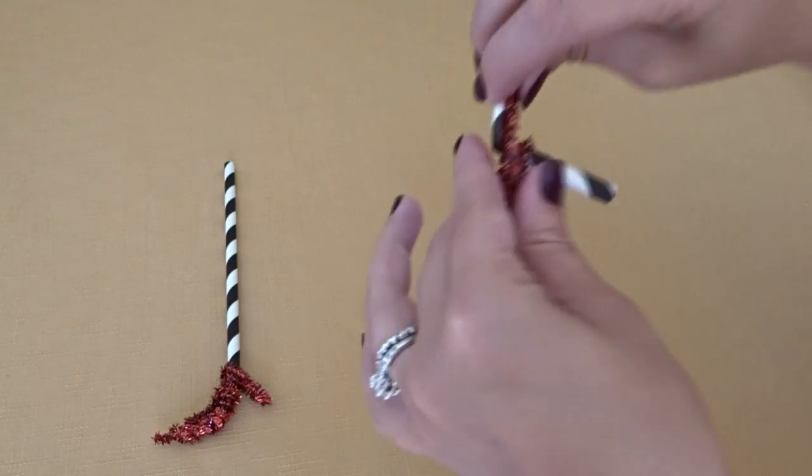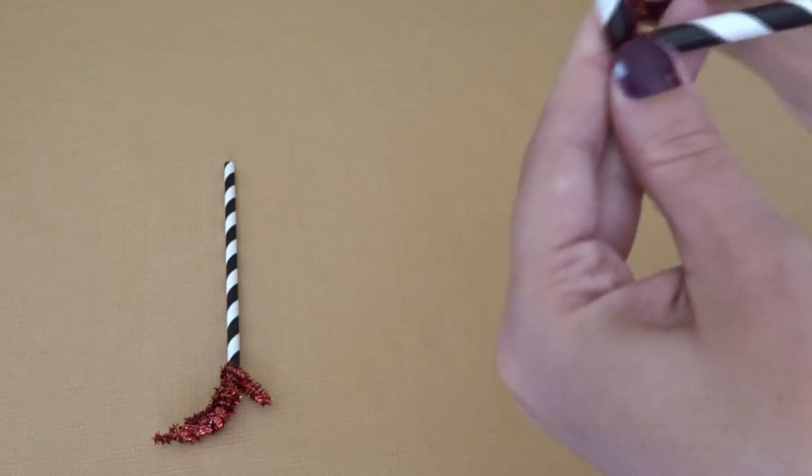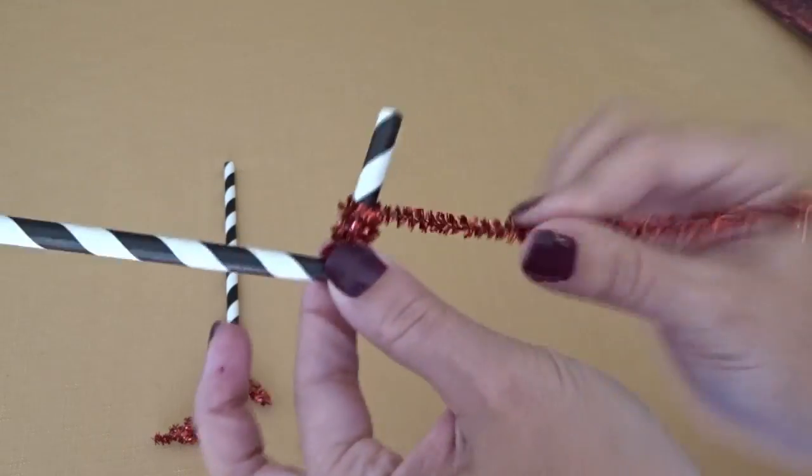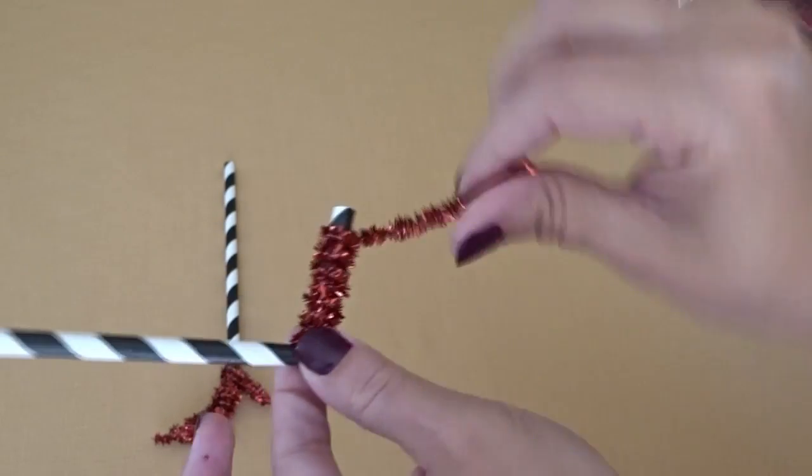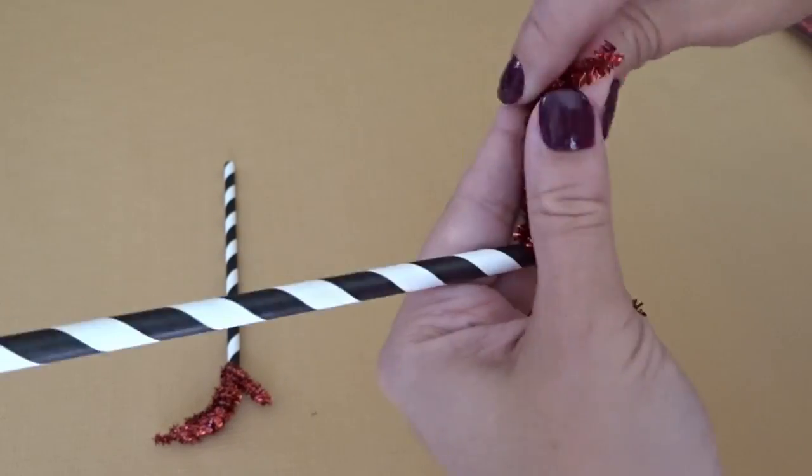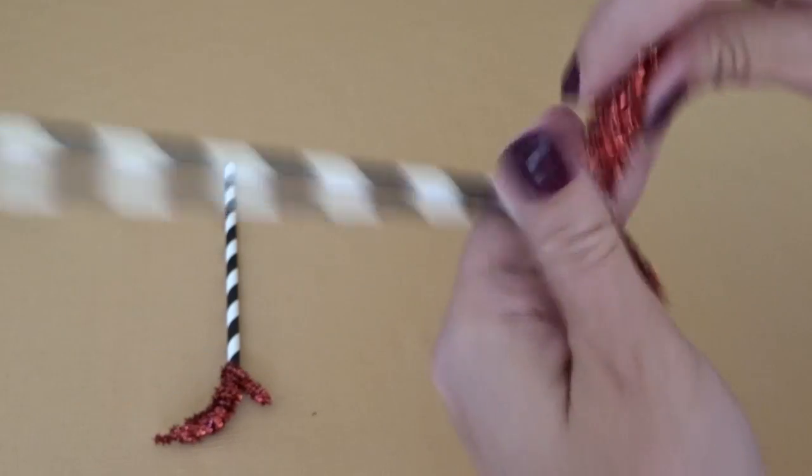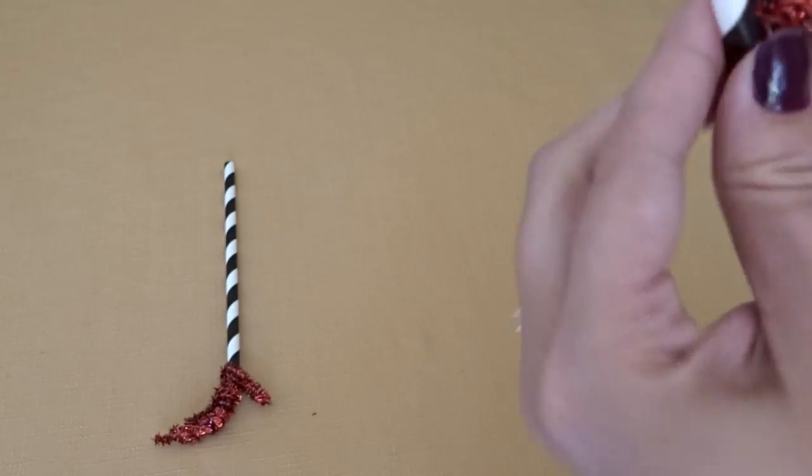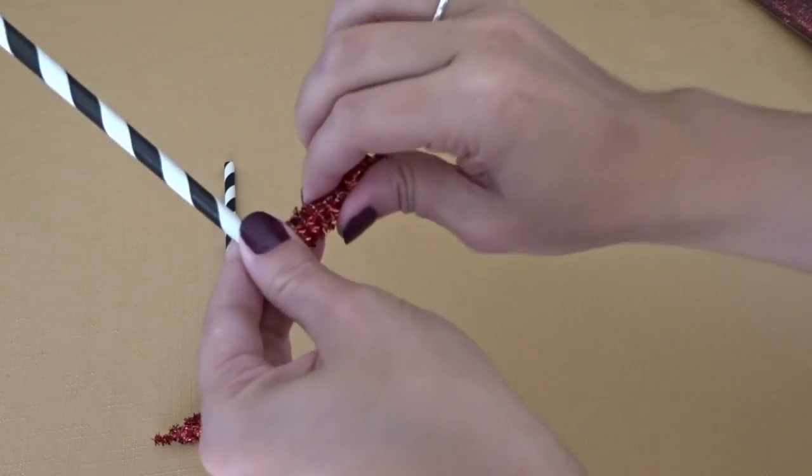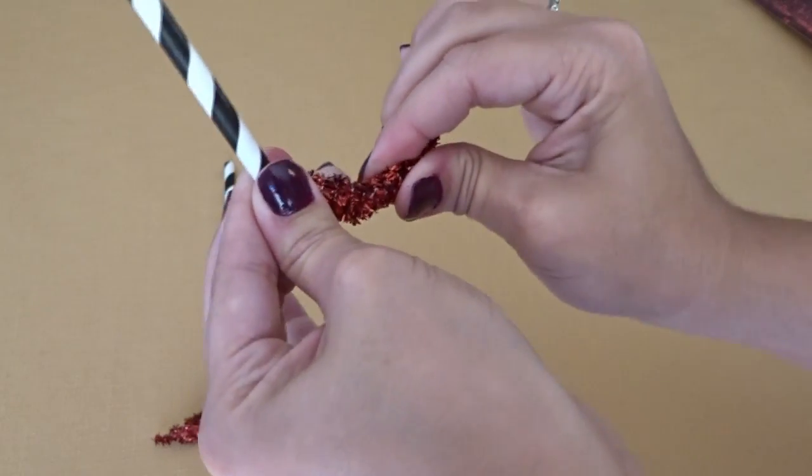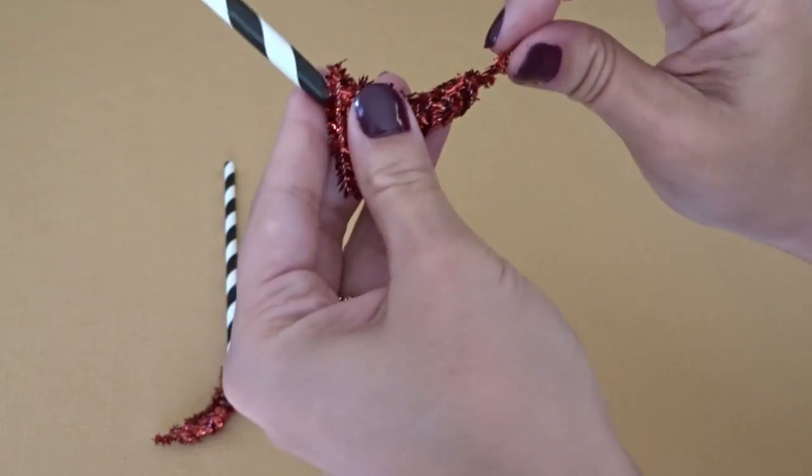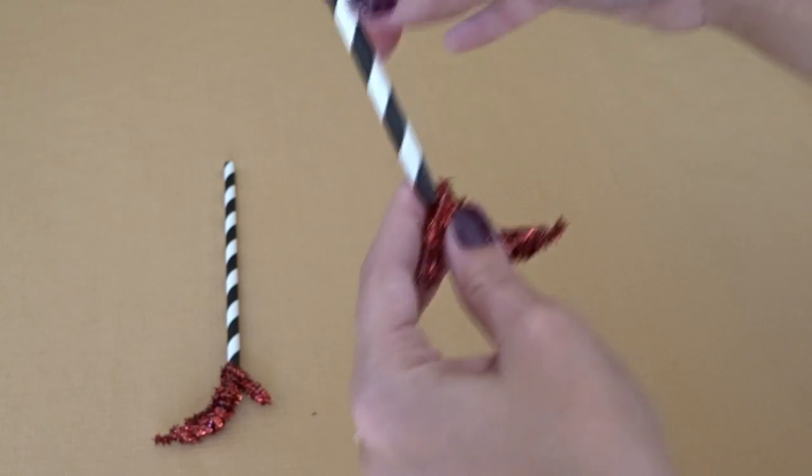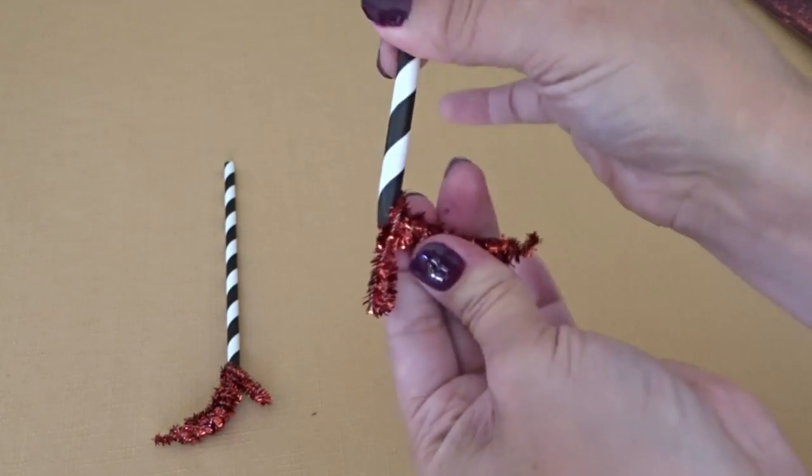And then you'll take the rest of the pipe cleaner at the bend and wrap it around. At the very end, you're just going to twist it up to make a nice little point. Then I bent the halfway point of the shoe again so you have that real high heel look about it. And here's the finished heel.